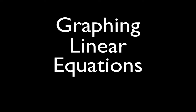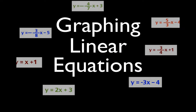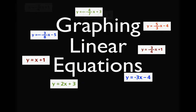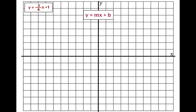In today's video, I'm going to show you how to graph the following seven linear equations. We have our x and y coordinate system, the y-axis, the x-axis, and these are the equations that we're going to graph. You will notice that each of the seven equations are already in the form y equals mx plus b, which is also known as the slope-intercept form.